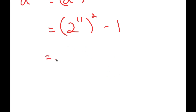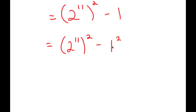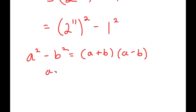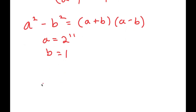Now, 1 is the same thing as 1 squared. So now I have 2 to the power of 11, to the power of 2, minus 1 squared. The reason I rewrote 1 as 1 squared is because now I can use the property a squared minus b squared is equal to a plus b times a minus b. Here, a is 2 to the power of 11 and b is 1. So now I get 2 to the power of 11 plus 1, times 2 to the power of 11 minus 1.